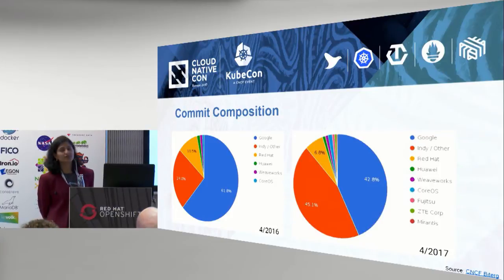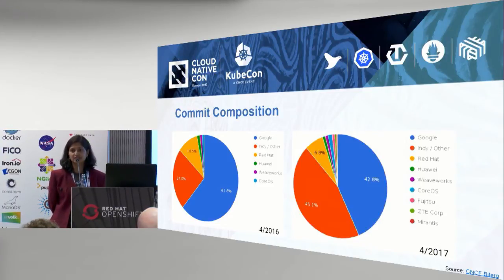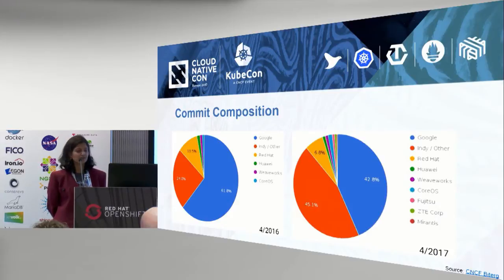There is a community that we have worked hard to develop and foster around this project that works on and shares this goal with us — to create this common platform. This chart shows the evolution of that community. Whereas in the beginning, Google and Red Hat were quite prominent in terms of contributions and commits, over time the number of independent contributors and companies has grown. This diversity of companies and individuals is extremely important to that platform goal.